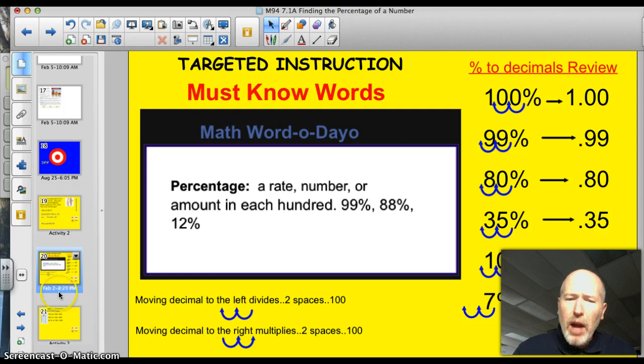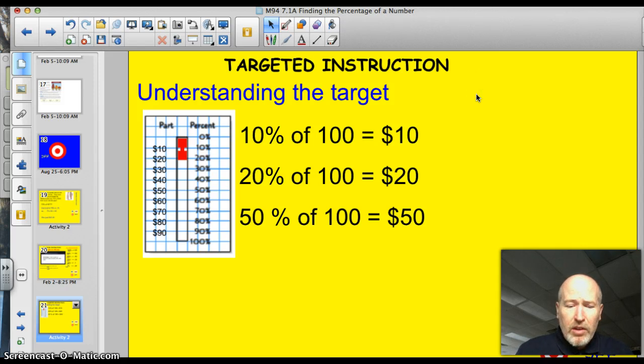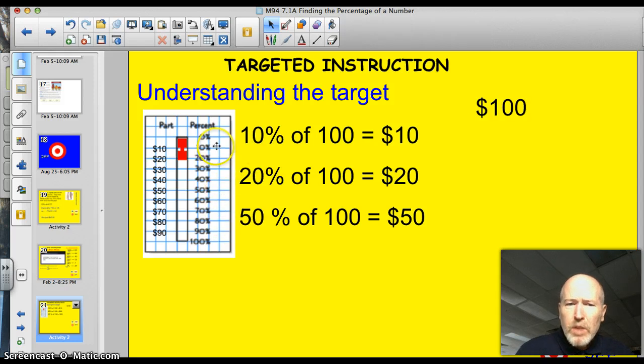All right, before we try some problems, I want to make sure we understand what we're doing. So, I have an understanding of the target slide tonight. If you want to buy something that costs $100, a pair of shoes, for example, and you pay 10% of that, you're only going to pay $10. If you pay 20%, you will pay $20.